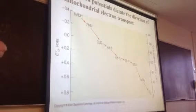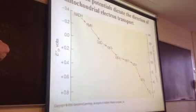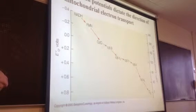So these electrons are starting out around minus 0.32 volts and they're headed towards oxygen, which is positive 0.8.